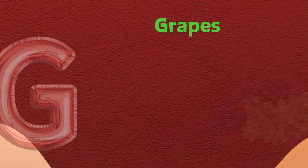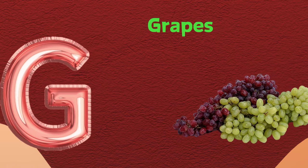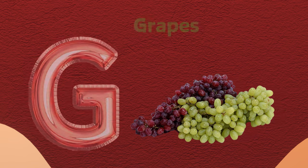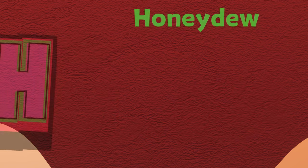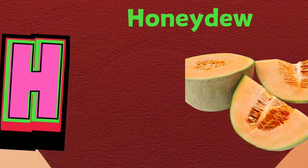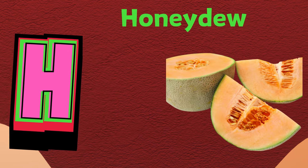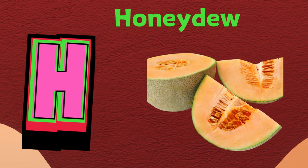G is for grapes. Guh, grapes. H is for honeydew. Ha, honeydew.